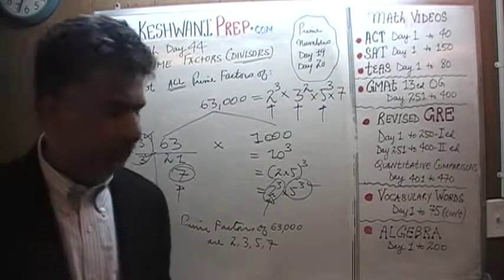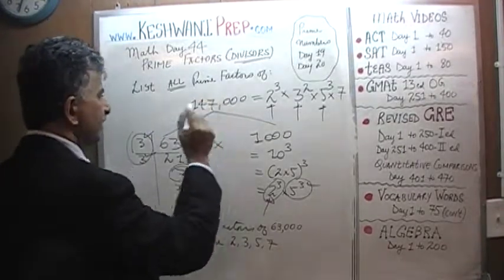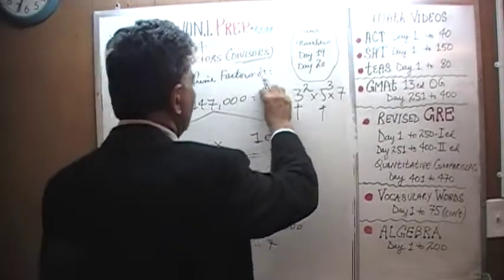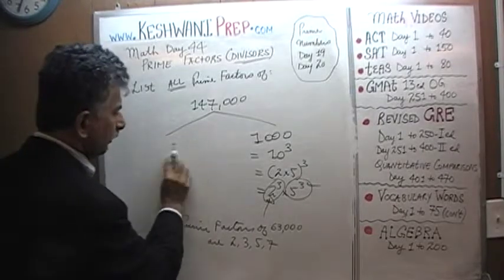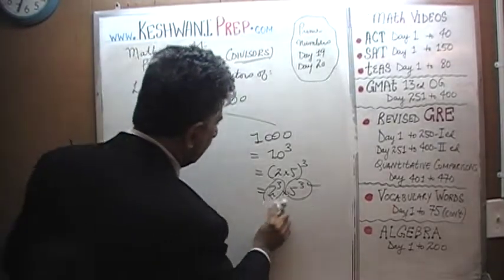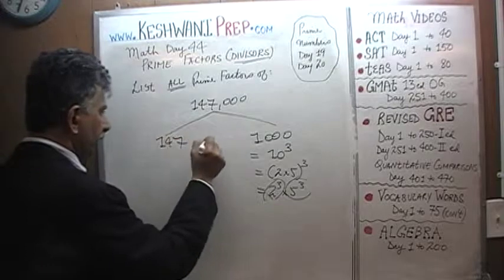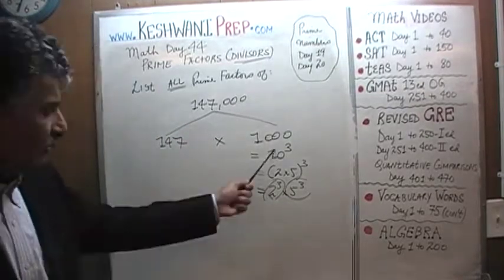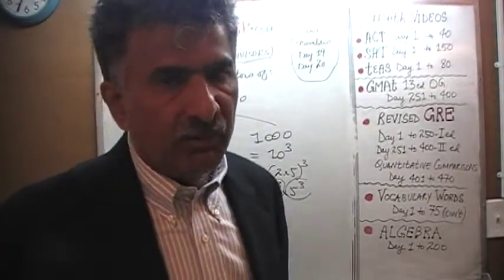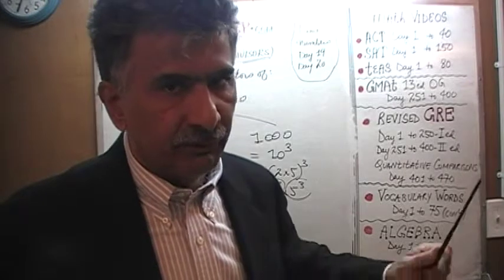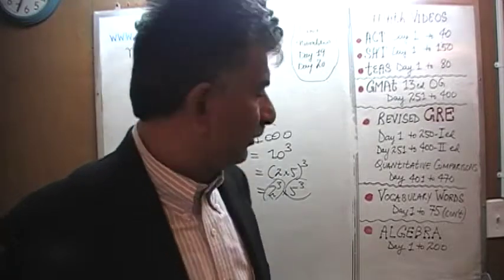Let's do one more, shall we? Do it yourself first. The next number is 147,000. 147,000 can be written as 147 times 1,000. 1,000 is the easy part — it only has two prime factors: 2 and 5. In fact, 10 raised to any power, no matter how large, only ever has two prime factors: 2 and 5.